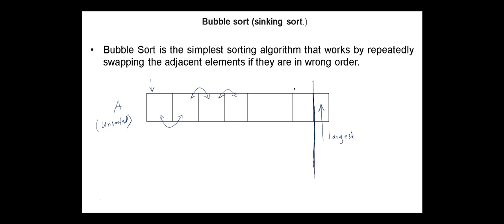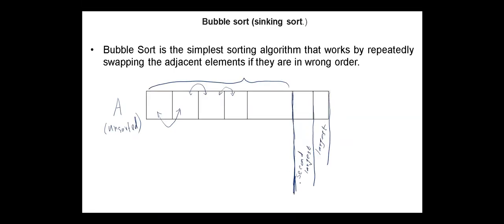After completing the second scan, we will have the second largest element here, or the largest among these elements. And again, in the next scan, we do not need to consider it. And this process is repeated until we are left with the first two remaining elements in the array.